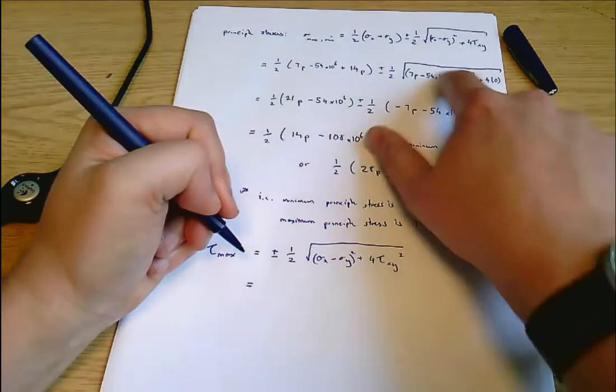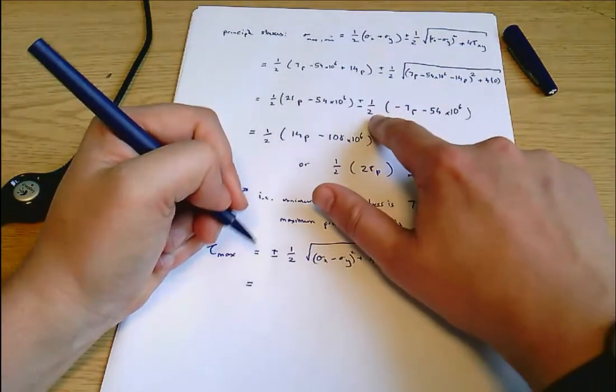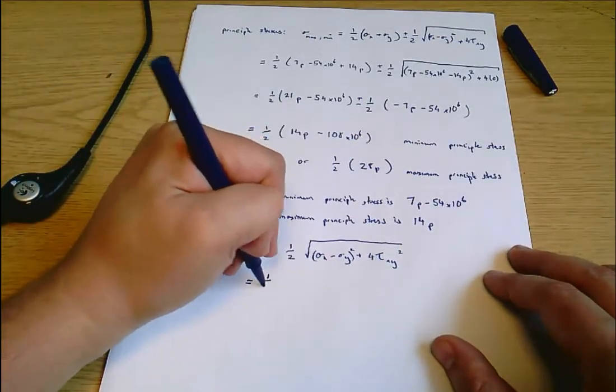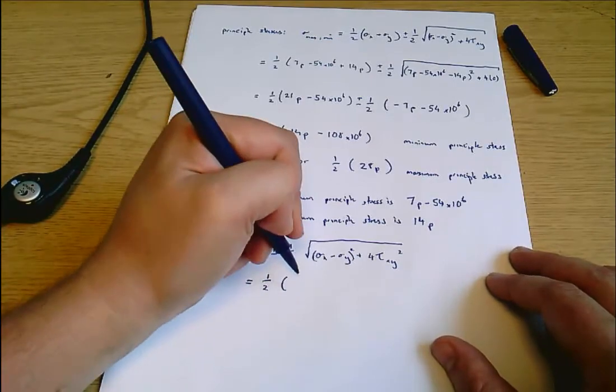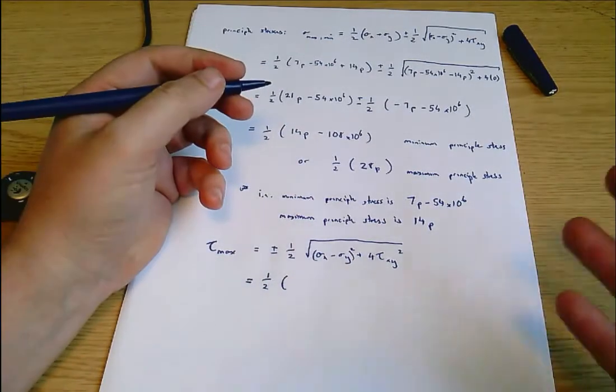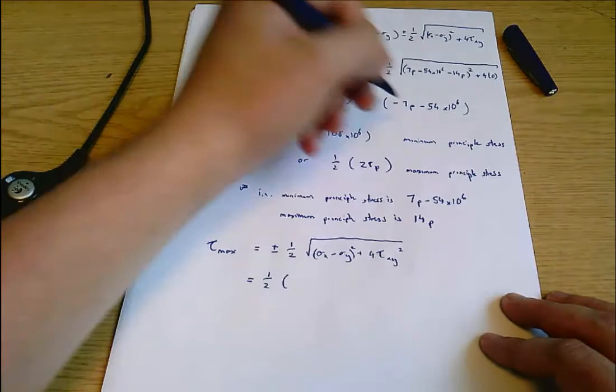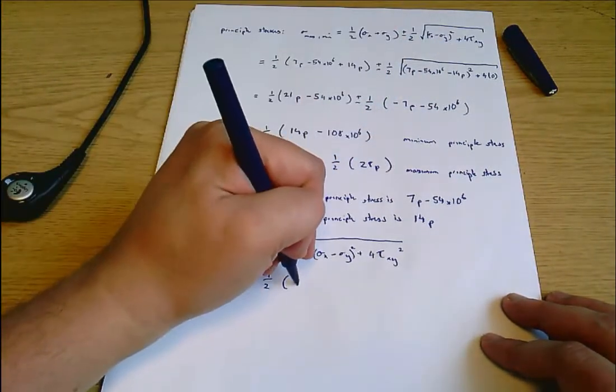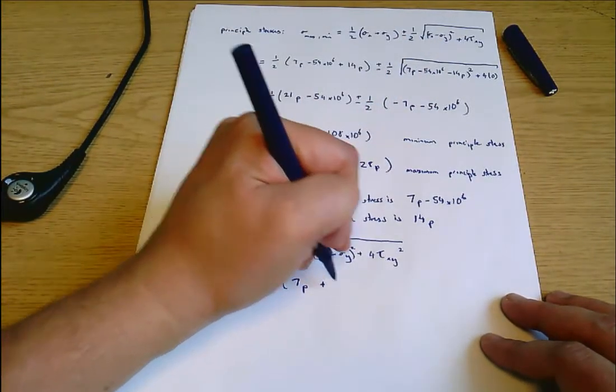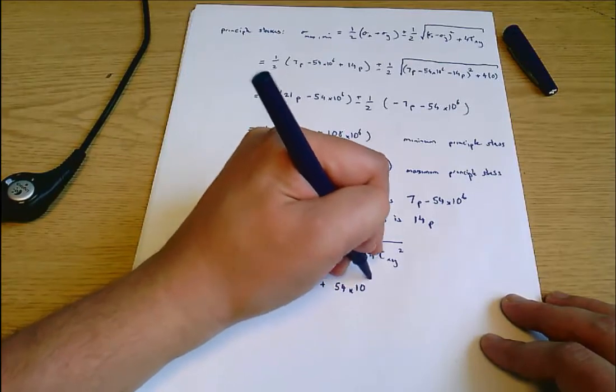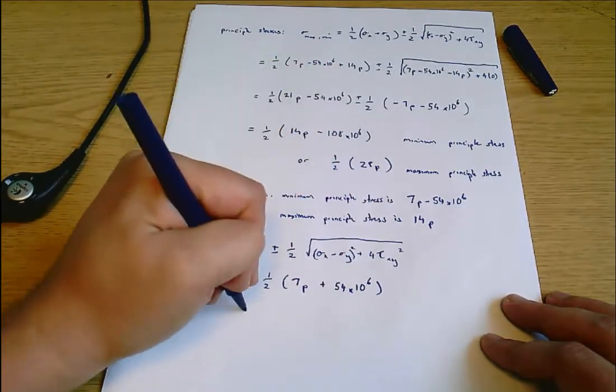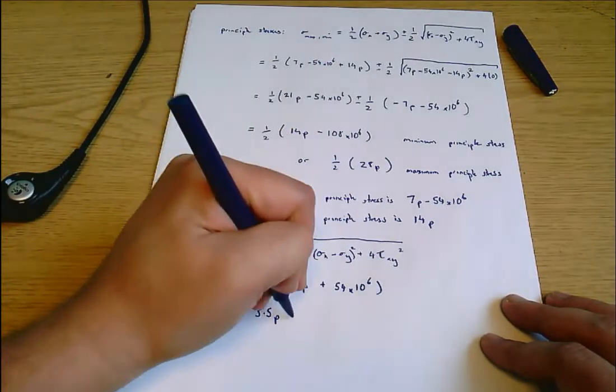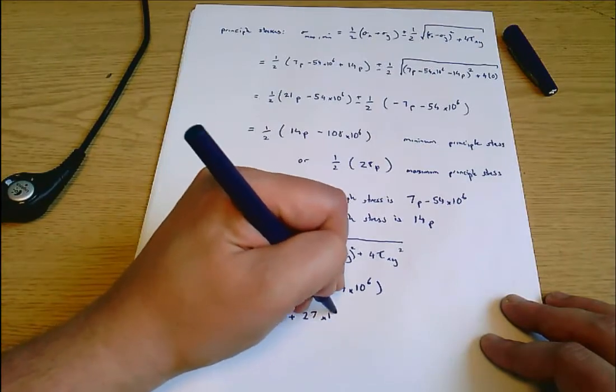Which equals, well it's this bracket here, so it's one-half of 7P plus 54 times 10 to the 6, which equals 3.5P plus 27 times 10 to the 6.